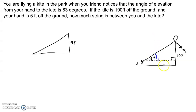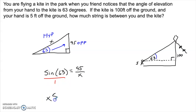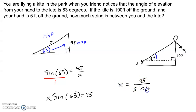The angle of elevation is 63 degrees, and we're looking for how much string is out — that's the hypotenuse of the triangle. Starting at the angle, across from it is the opposite side of 95. That's our hypotenuse because that's where the right angle is. With an opposite and a hypotenuse, we set up a sine equation: sine of 63 equals 95 over x. Cross-multiplying, x times sine of 63 equals 95, so x equals 95 divided by sine of 63, which is about 106.6 — approximately 107 feet of string.